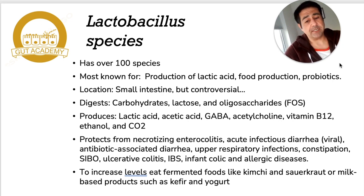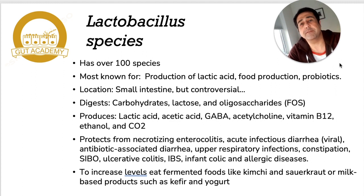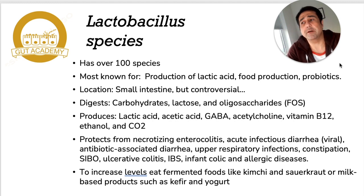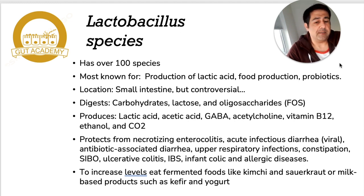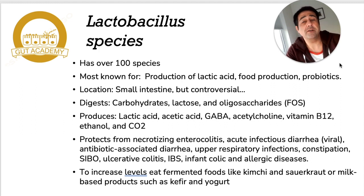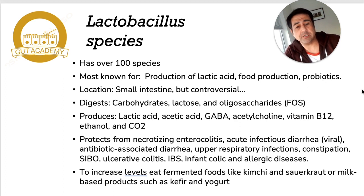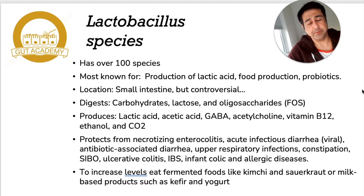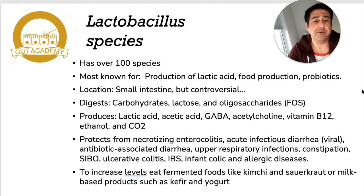The metabolic versatility of Lactobacillus results in the ability of these microbes to colonize a variety of habitats. They can be found within plant species, animals, raw milk, and food products. This makes Lactobacillus one of the largest families of bacteria, with over a hundred different species and subspecies. Because of this number, it is a highly diverse and very large group that shows lots of variation and variability.